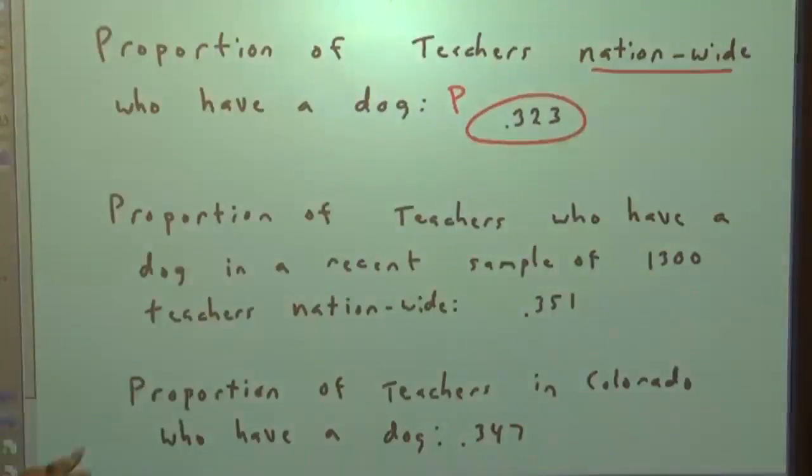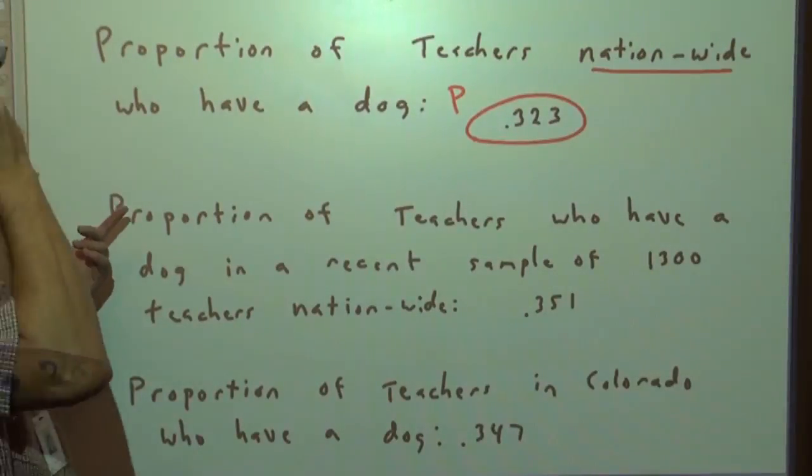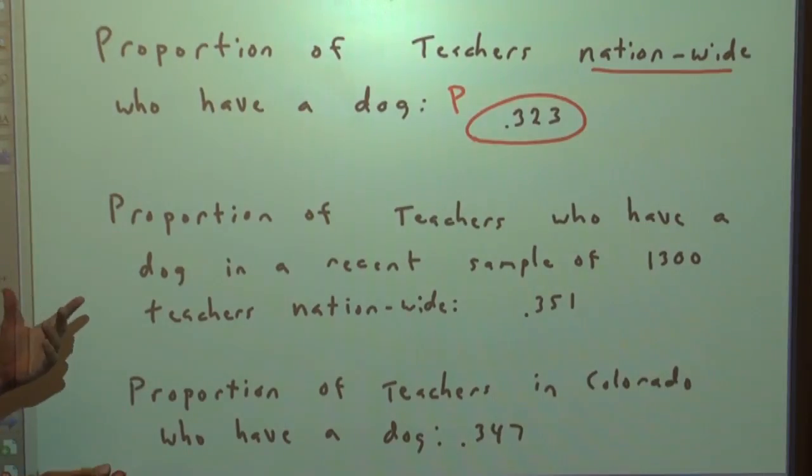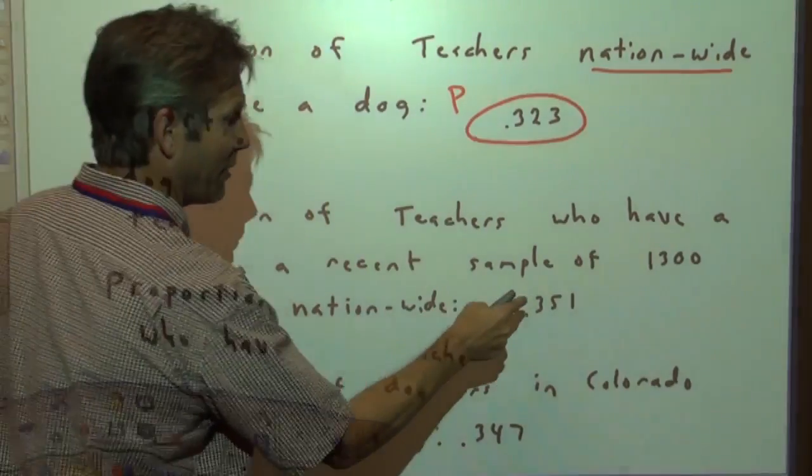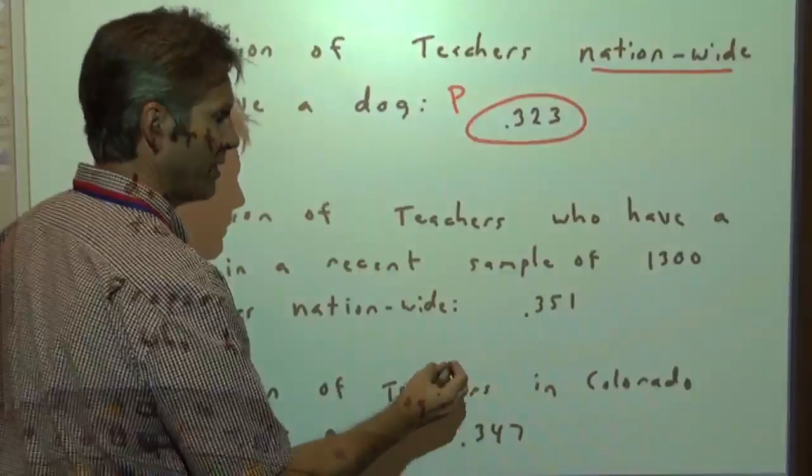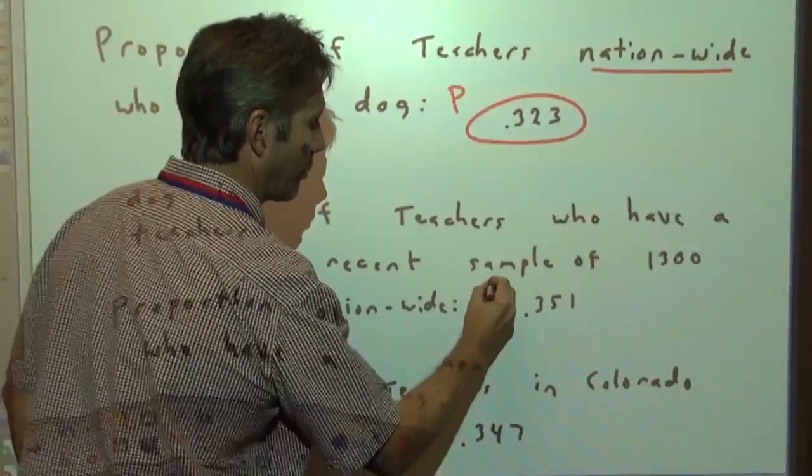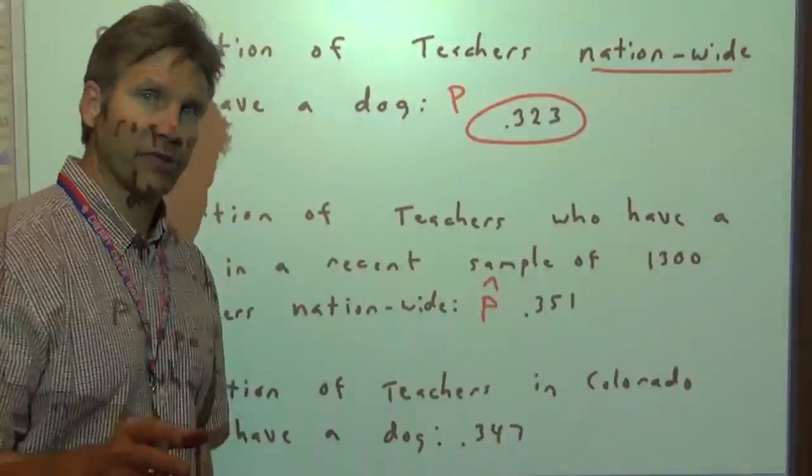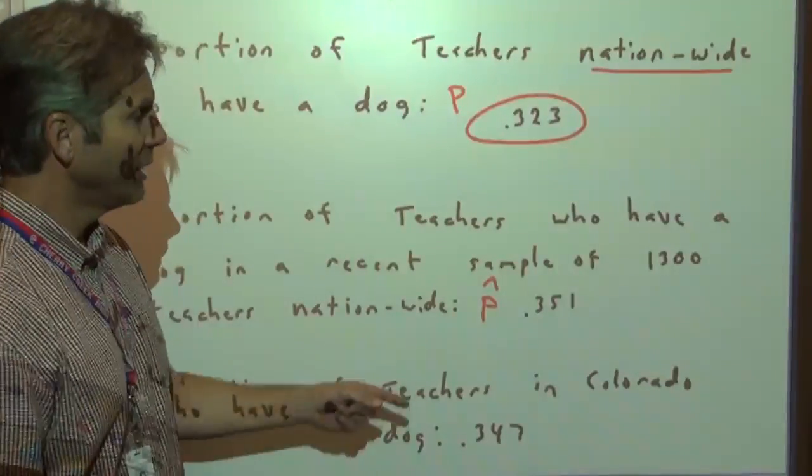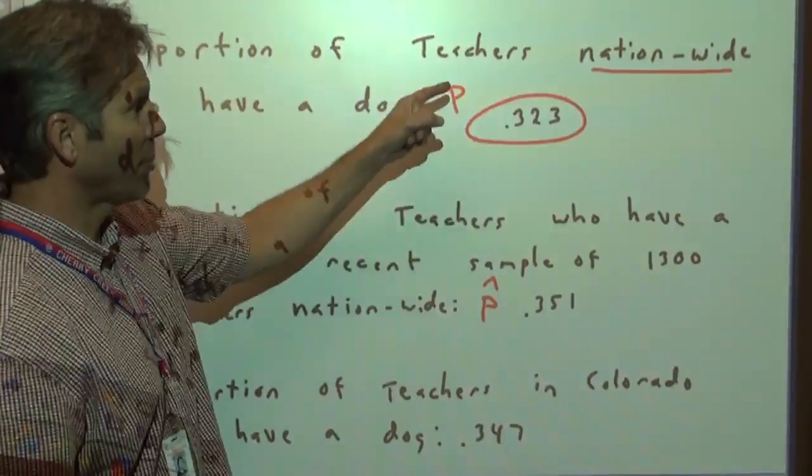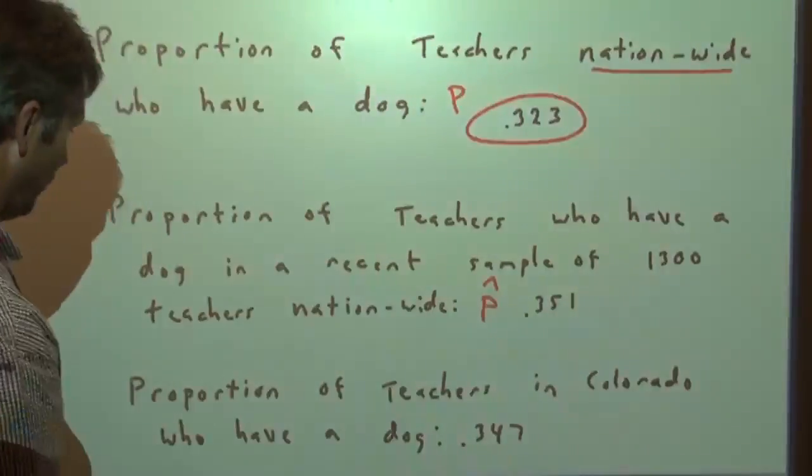But what if we have proportion of teachers who have a dog in a recent sample of 1,300? Now this is a sample proportion, so it's a statistic. We'll learn later. We haven't dealt with it yet, and we're not going to deal with it in this unit, but I just want to make the point. This is a sample proportion, that's a population proportion, and those are the symbols we use.